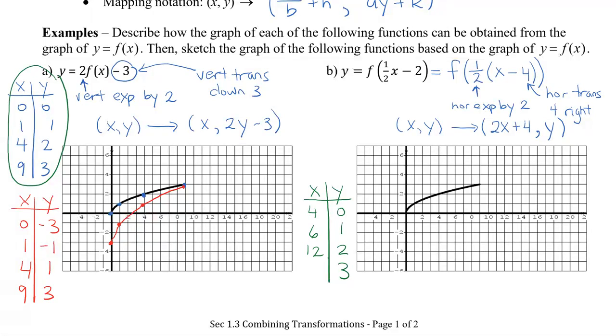So graphing my new points I get four zero, six one, twelve two, and twenty-two three. So connecting my four points I get a very horizontally stretched radical graph, which actually is true because the horizontal expansion is by two, which seems to have stretched it out more. And that's the end.